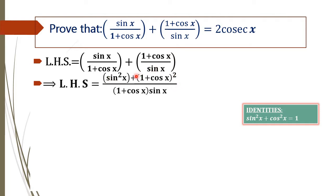By observing this term, we can see the denominator is 1 plus cos x into sin x. We know that 1 by sin x equals cos x. Now, in order to get cos x, we have to retain sin x in the numerator. So, we are not going to expand the denominator but are only expanding and simplifying the numerator, so that we get a term which can cancel the unwanted term 1 plus cos x in the denominator.